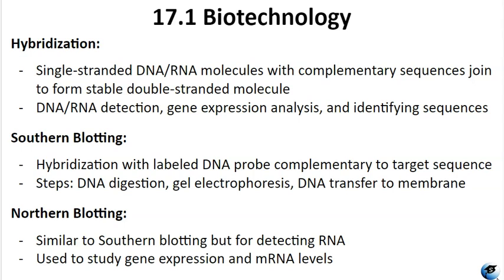Southern blotting is a lab technique used to detect specific DNA sequences in a sample. It involves several steps including DNA digestion, gel electrophoresis, transfer of the DNA to a membrane, and then hybridization with a labeled DNA probe that's complementary to the target sequence. Southern blotting allows researchers to identify and analyze DNA fragments of interest.